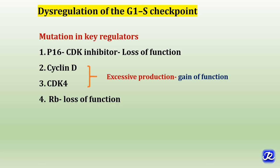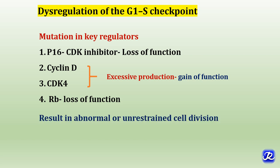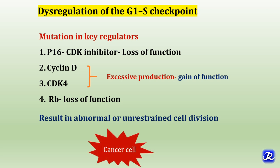Virtually all cancer cells show dysregulation of the G1/S checkpoint due to mutation in one of four genes that regulate the phosphorylation of RB protein. Loss of function of CDK inhibitor P16, overproduction of cyclin D CDK4, or mutation of the RB gene resulting in its loss of function ultimately leads to abnormal or unrestrained cell division and transformation of a normal cell into a malignant cell.